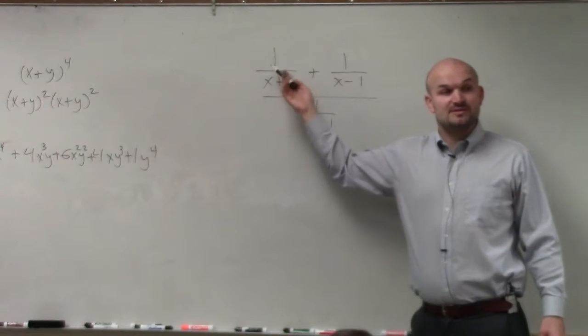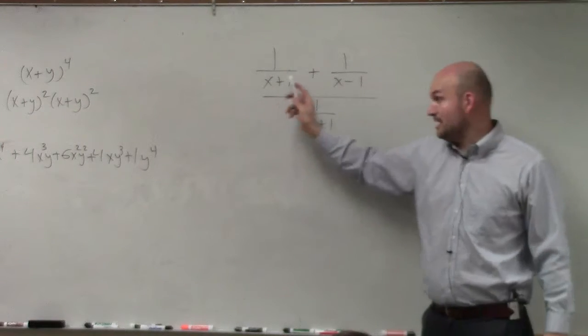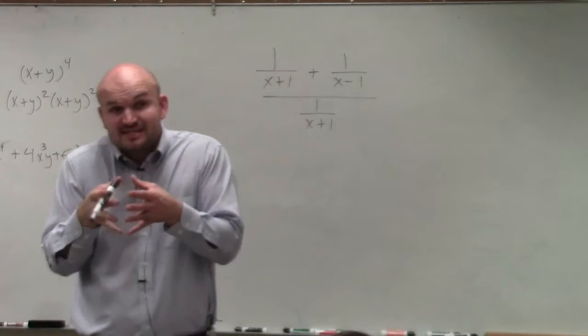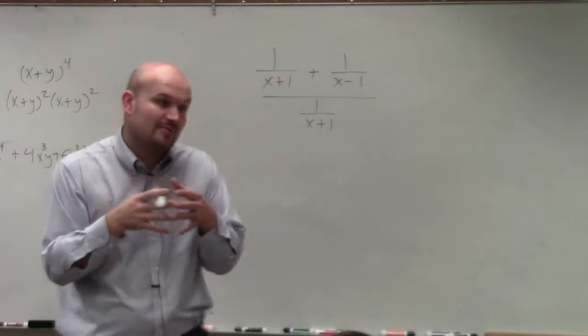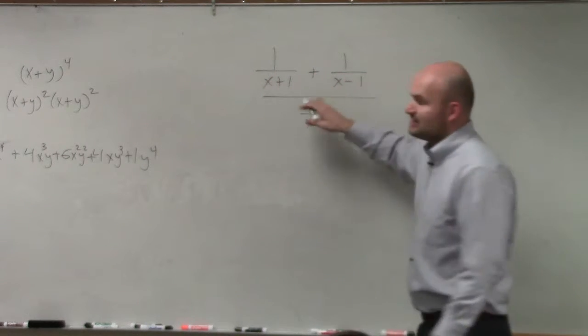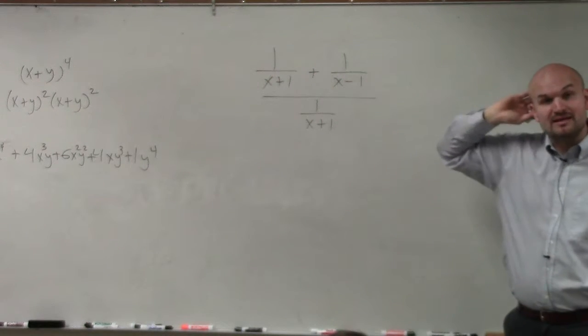We can combine like terms up here in the numerator, right? We can combine like terms, or what another thing is we can just get rid of all these fractions as well, and we can do that by multiplying by the reciprocal, I'm sorry not by the reciprocal, but let's multiply by the common denominator.